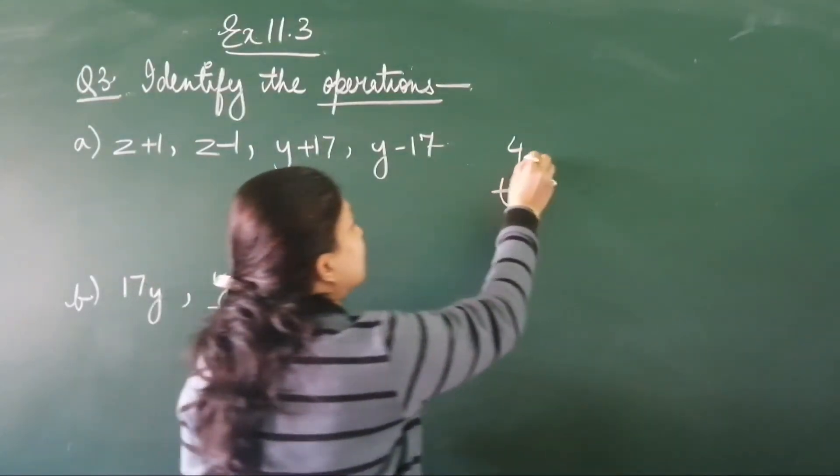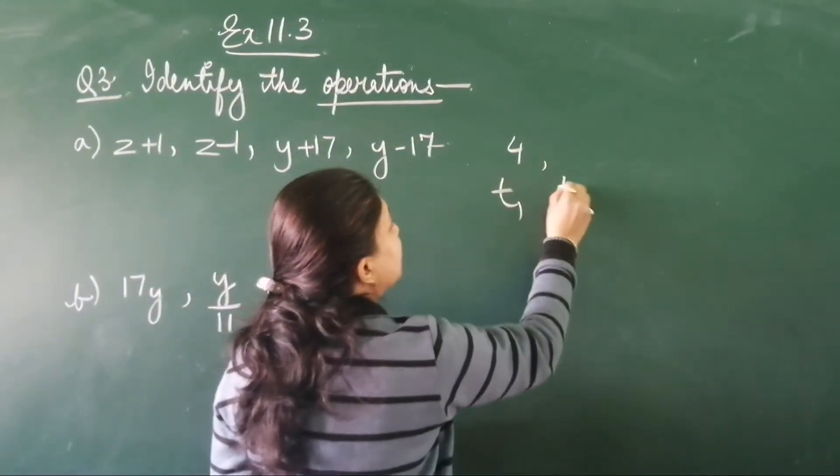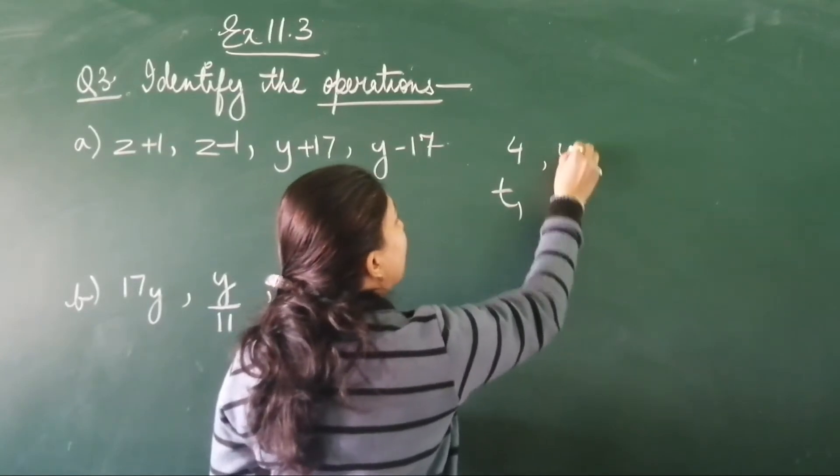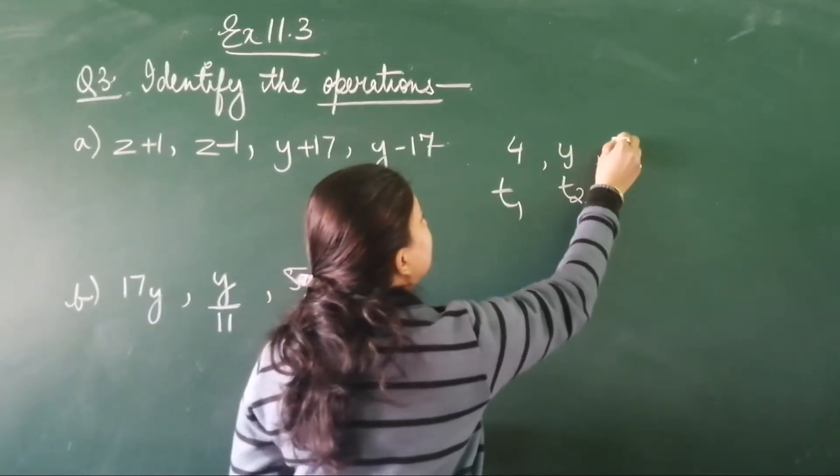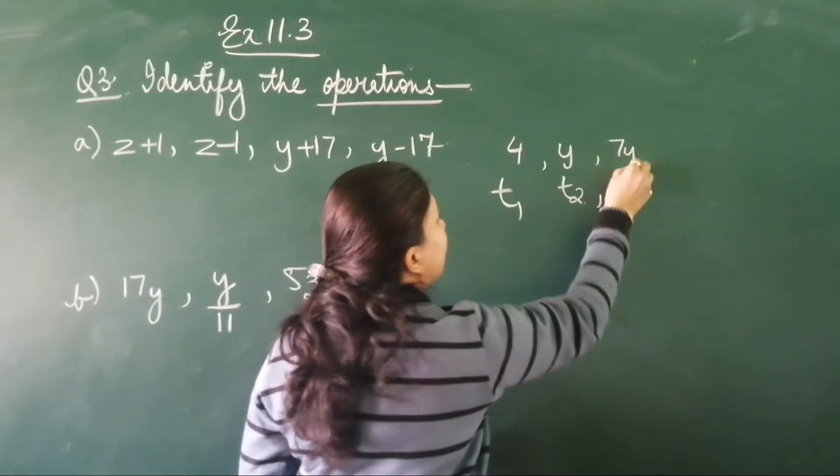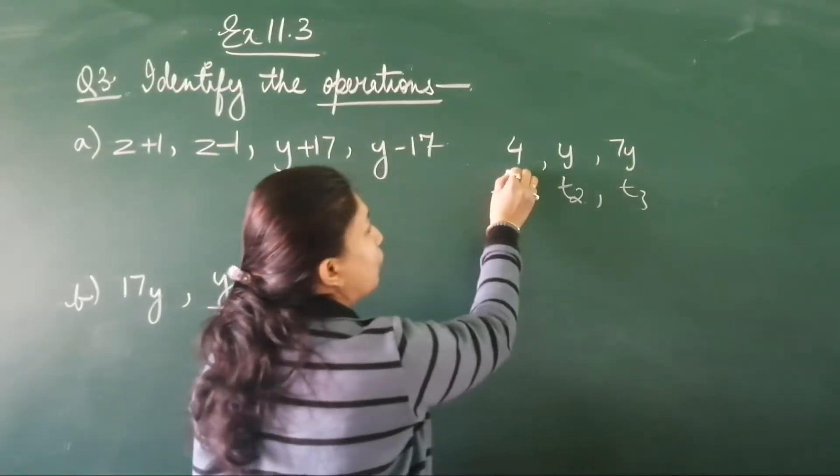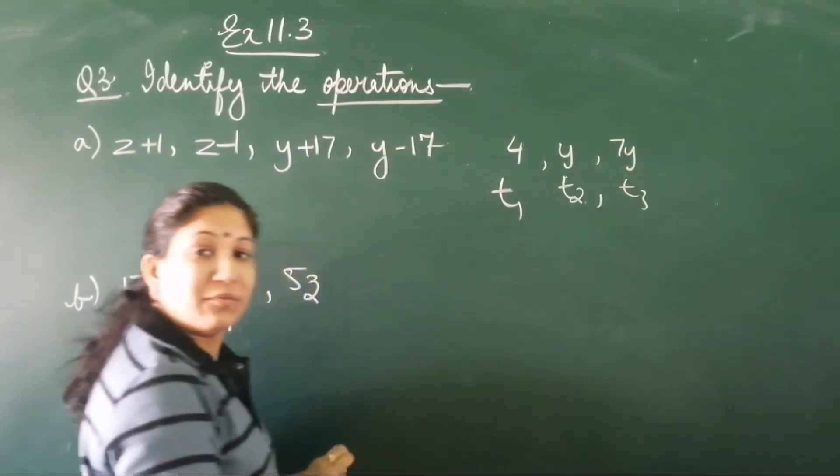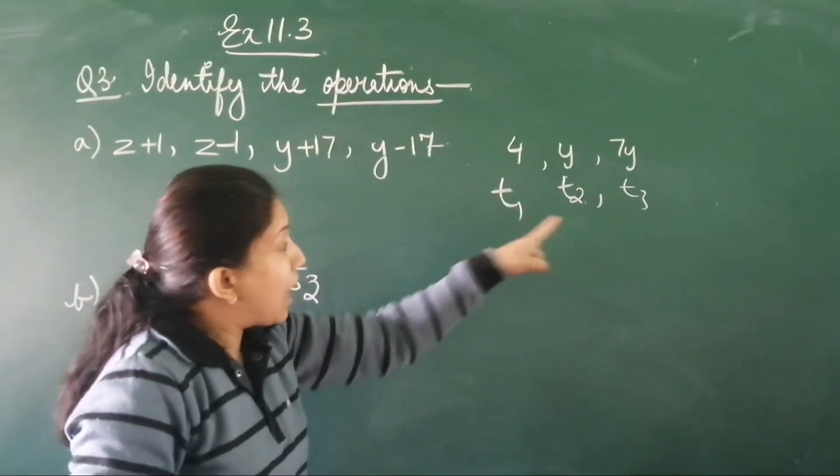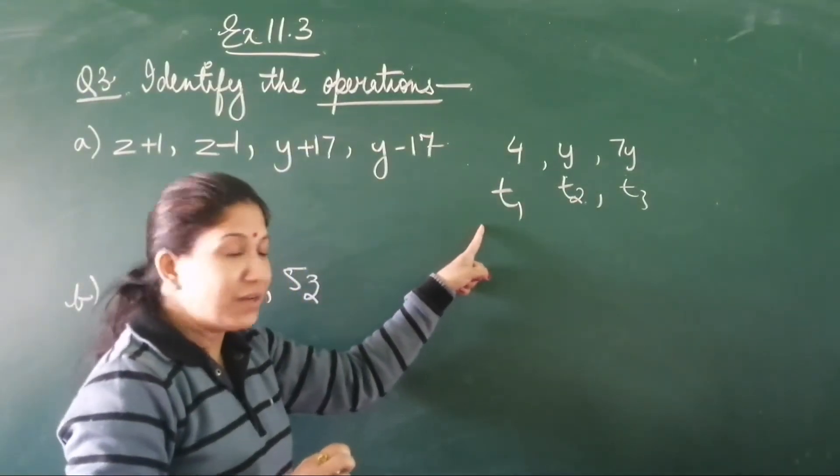Now, take for example, my first term is 4, my second term is y, and my third term is 7. Three terms I have: 4, y, and 7. But have they formed an expression children? No.